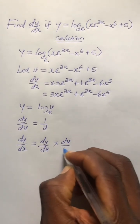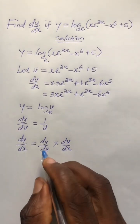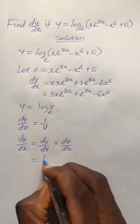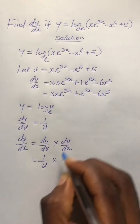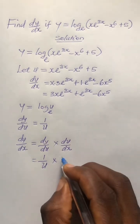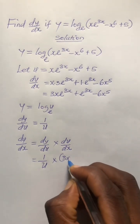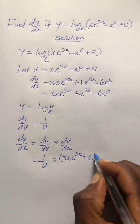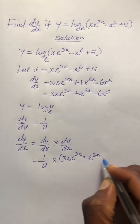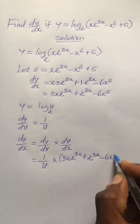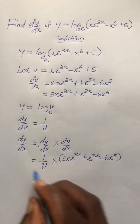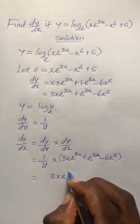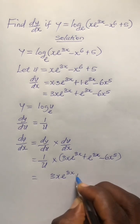We substitute into the chain rule formula. dy/du is 1/u, and du/dx is the expression we found: bracket 3x·e^(3x) plus e^(3x) minus 6x^5. So dy/dx equals 1/u times (3x·e^(3x) plus e^(3x) minus 6x^5).